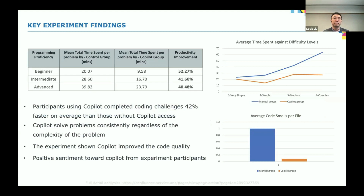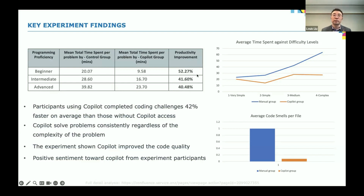Here are the key experiment findings. Firstly, no matter what your programming capabilities — whether you're a beginner who just learned programming for a short period of time, or all the way to advanced — we found that actual productivity does improve. It's just that beginners improve a bit more compared to more advanced people. This is aligned with other findings from similar studies conducted by Microsoft, GitHub, and a number of others.